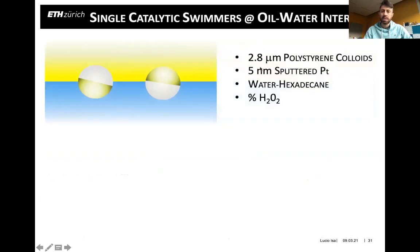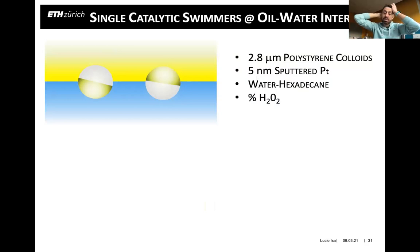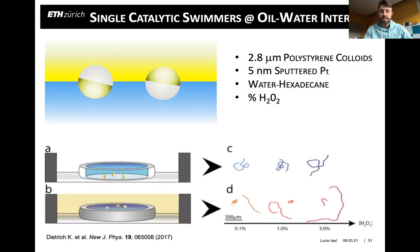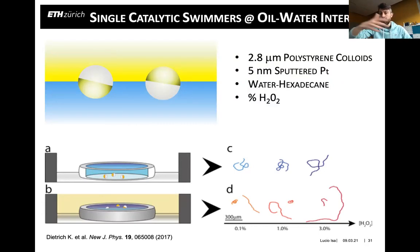The experiments use almost three-micron polystyrene colloids coated with a thin layer of platinum — five nanometers of platinum sputter-coated onto the particle surface. We find them at an interface between hexadecane, the same oil used to characterize interfacial tension previously, and water — specifically an aqueous solution of hydrogen peroxide, as a function of the amount of hydrogen peroxide included. We compare the behavior of these particles in bulk versus at the interface, and you already see some representative trajectories here.